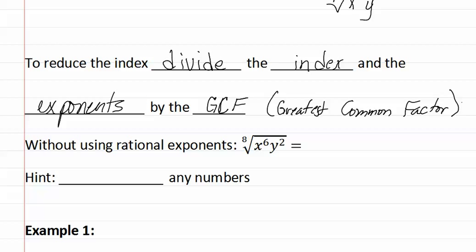So doing this same problem without using rational exponents, we simply see that they all have a two in common, and therefore divide each of them by two. This then gives us the new index of four, six divided by two gives us x to the third, and two divided by two gives us just a y. As you can see, this was much simpler.